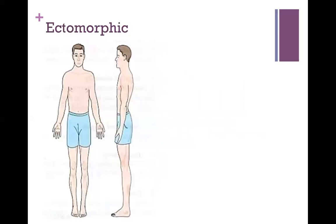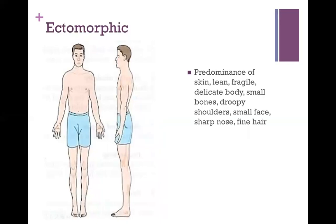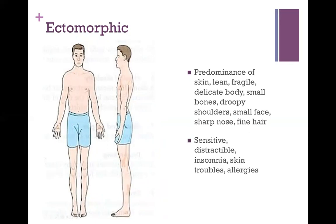The second body type Sheldon came up with was the ectomorphic body type, or the ectomorph. He claimed the ectomorph had a predominance of skin — a lean, fragile, delicate body, small bones, droopy shoulders, small face, sharp nose, and fine hair. According to Sheldon, this person was sensitive, distractible, and had insomnia, skin troubles, and allergies.